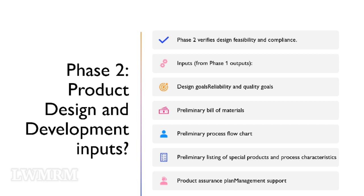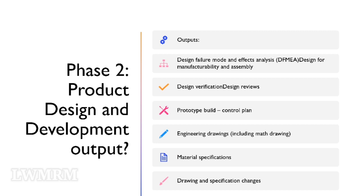Phase 2 — Product Design and Development — verifies design feasibility and compliance. Inputs are from Phase 1 outputs: design goals; reliability and quality goals; preliminary bill of materials; preliminary process flow chart; preliminary listing of special products and process characteristics; product assurance plan; and management support. Phase 2 outputs: Design Failure Mode and Effects Analysis (DFMEA); design for manufacturability and assembly; design verification; design reviews; prototype build; control plan; engineering drawings including math drawings; material specifications; and drawing and specification changes.